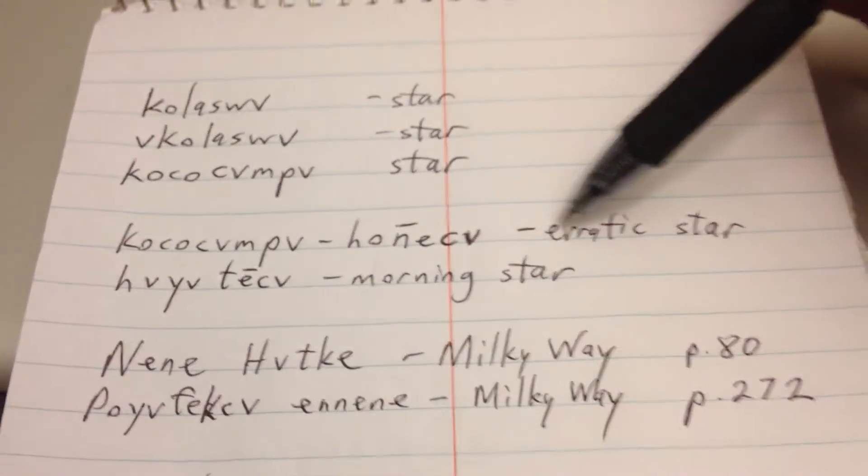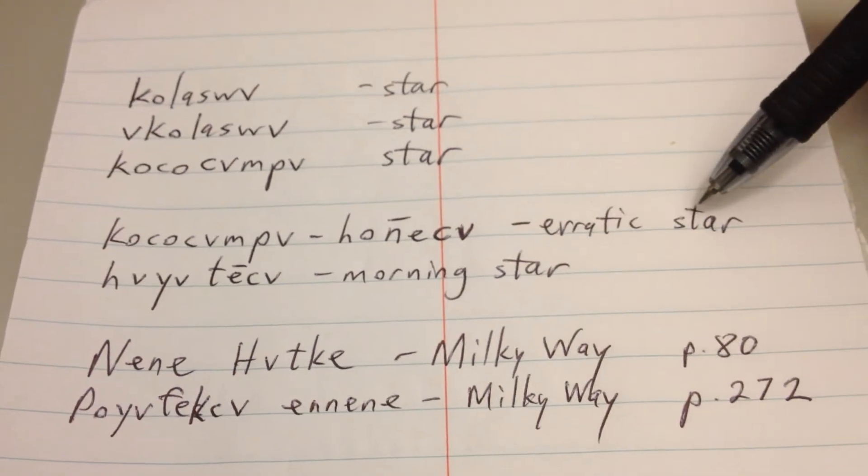So you had kojachumpa honicha, which could refer to planets, but at least in Muscogee it seems to say erratic star.